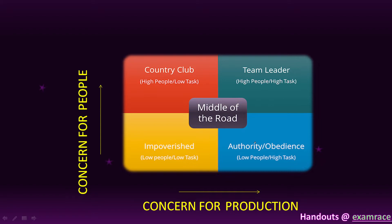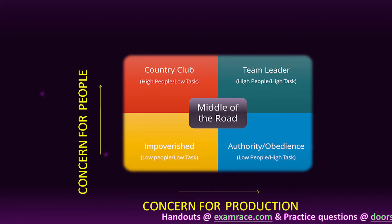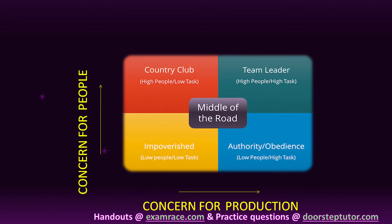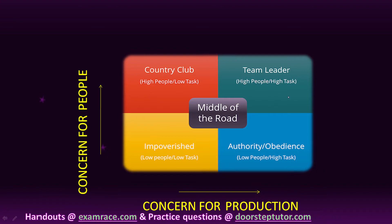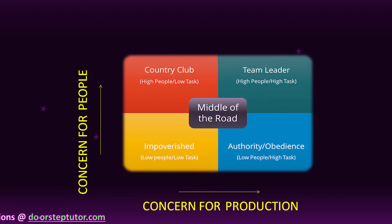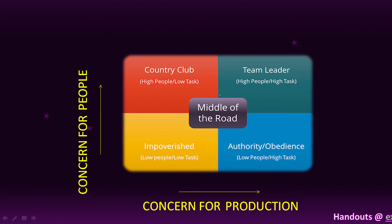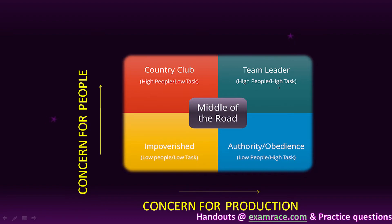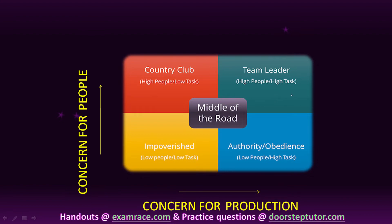Team leadership is positioned at (9,9) — high concern for people and high concern for task. Relationship is good and task is also good, so team leader represents a very effective leadership style.